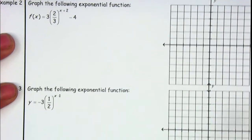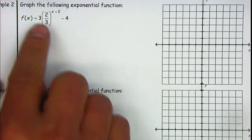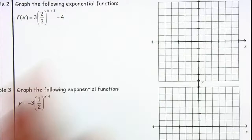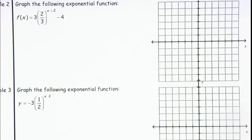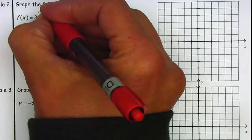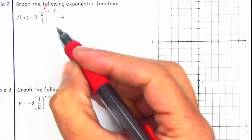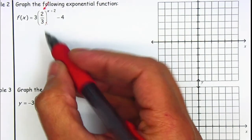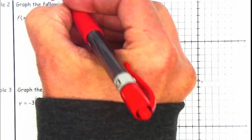Let's go and try example number two. On example number two, we have f of x is equal to three times two-thirds to the power of x, plus two, minus four. First we decide if this is going to be an exponential growth or decay. The value of b is two-thirds — bigger than one or less than one? Two-thirds is less than one, so this is going to be a decay.